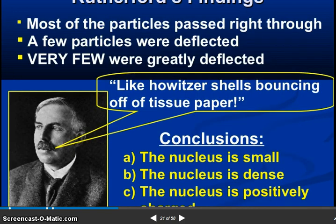So Rutherford findings. Most of the particles passed right through. A few particles were deflected. A very few were greatly deflected, like a howitzer shell bouncing off tissue paper. So conclusion: the nucleus is small, the nucleus is dense, and the nucleus is positively charged.